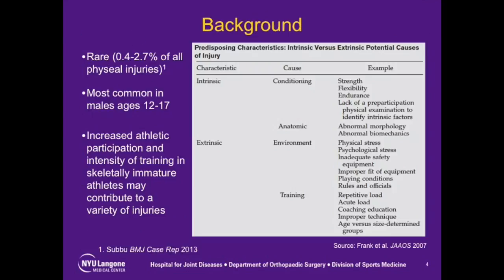Tibial tubercle avulsion fractures are relatively rare injuries with a reported incidence of 0.4 to 2.7 percent of all physeal injuries. They most commonly present in athletic males aged 12 to 17 years. The theory is that increased athletic participation, coupled with higher intensity training, creates both intrinsic and extrinsic causes of fracture at the level of the tibial tubercle physis.